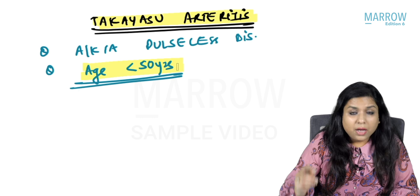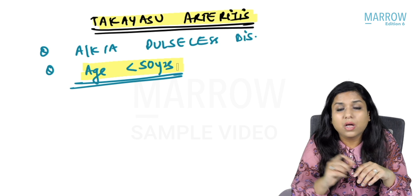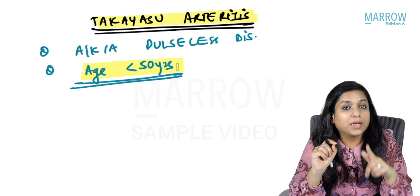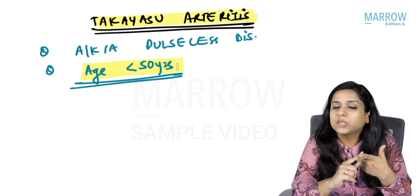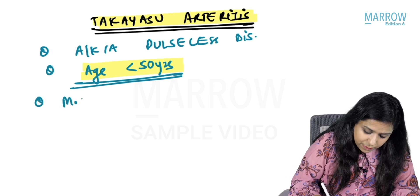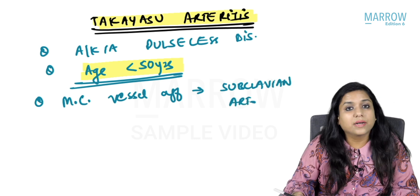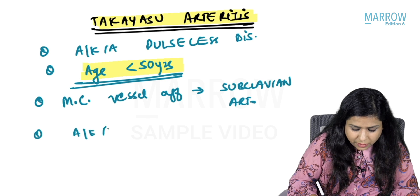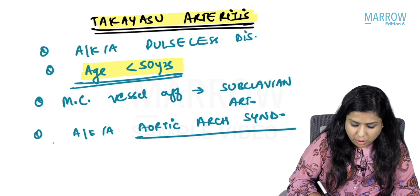Harrison states that Takayasu arteritis is very similar to giant cell arteritis, and the most important criterion to differentiate them is the age of the patient: more than 50 years suggests giant cell, less than 50 years suggests Takayasu. It is also known as aortic arch syndrome, as the aorta and its branches are involved. The most common vessel affected is the subclavian artery.